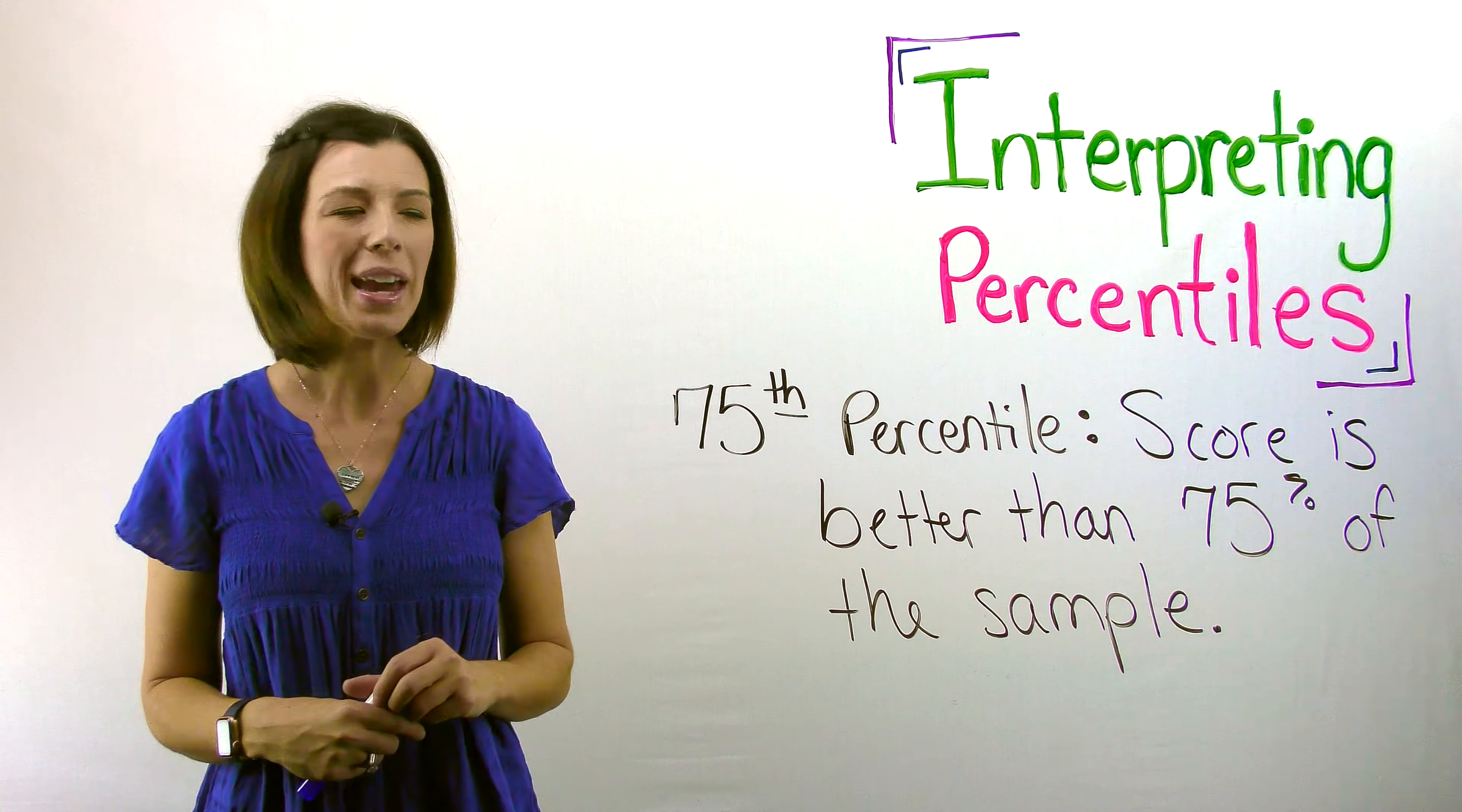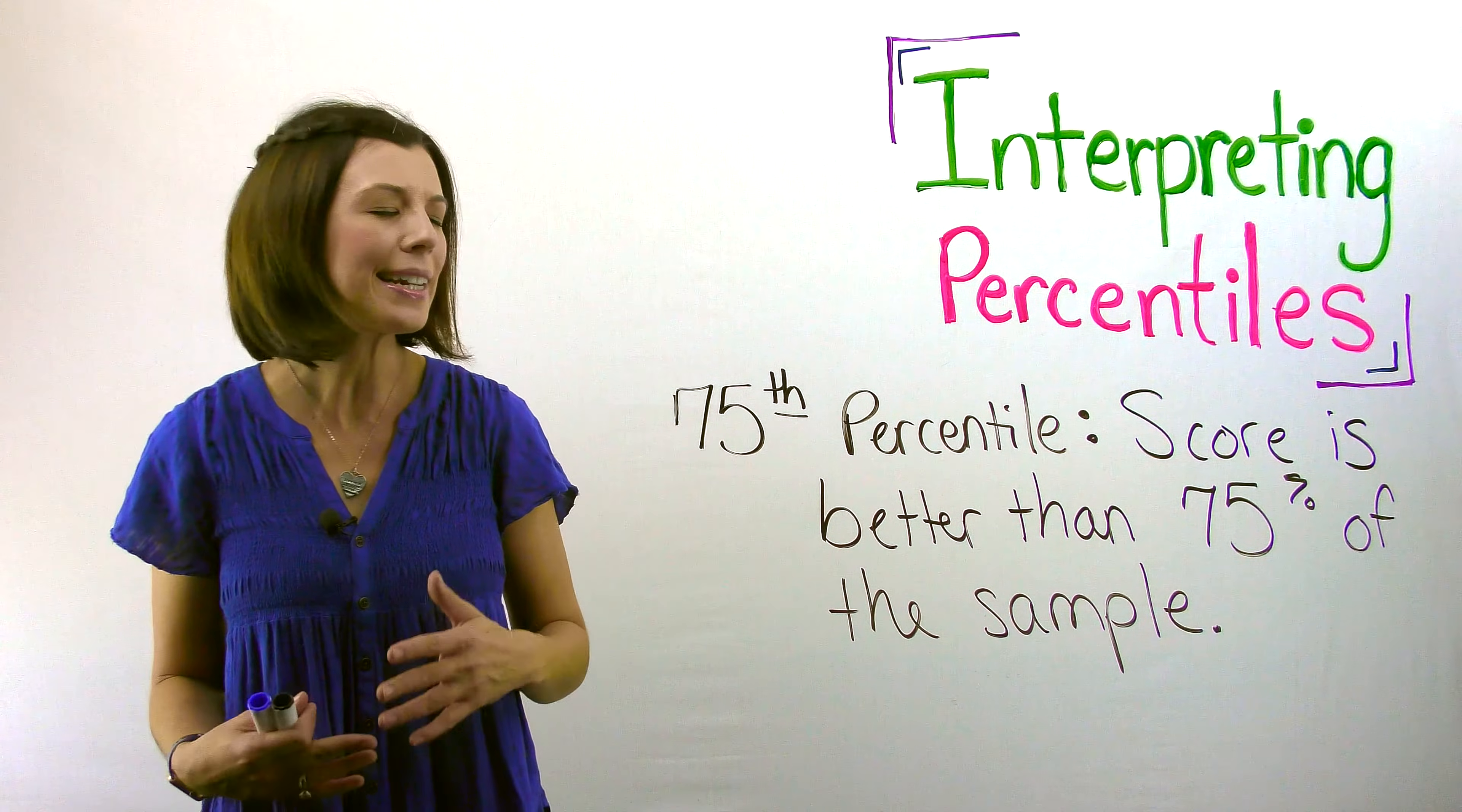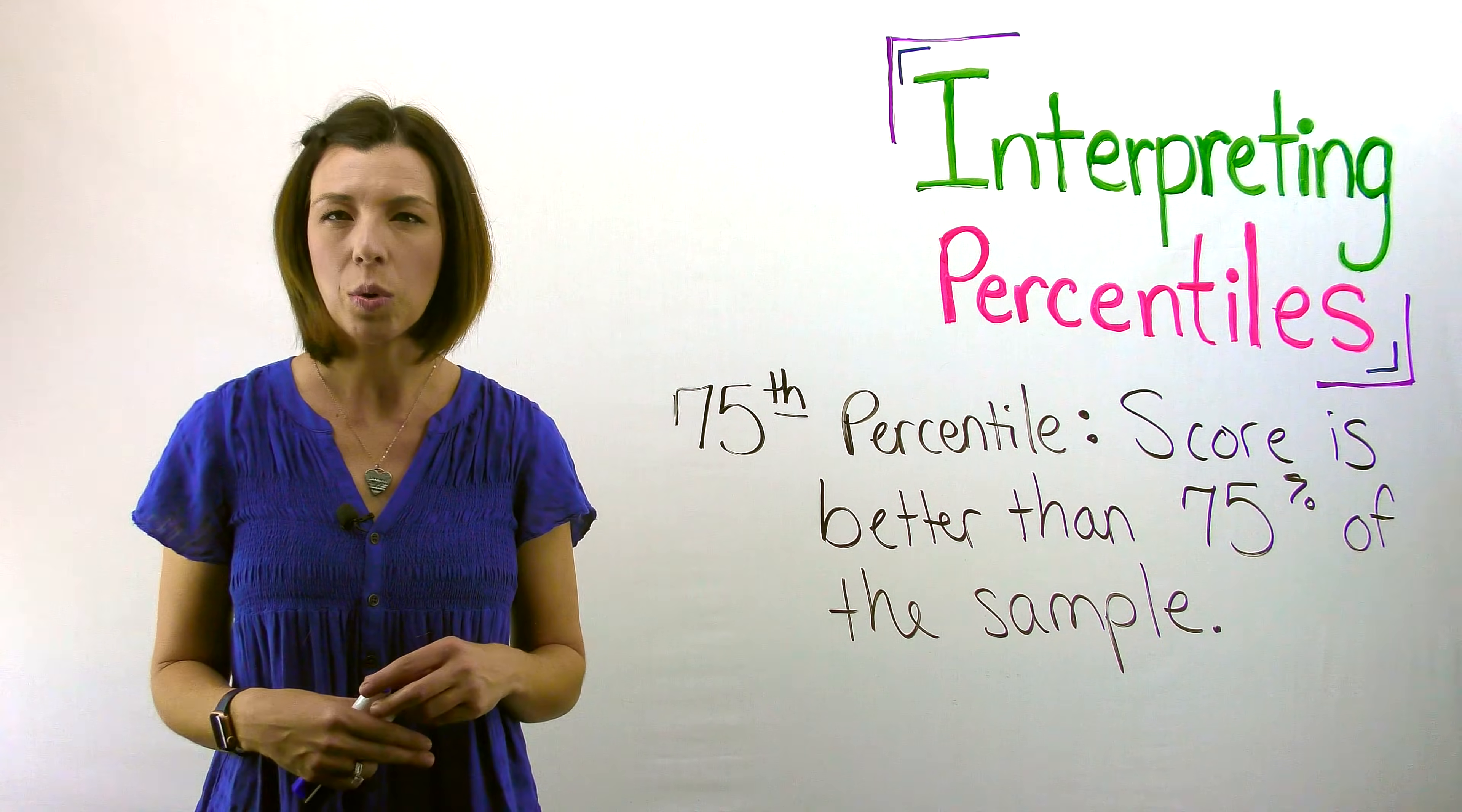I want to make sure that we're on the same page. The 75th percentile has absolutely nothing to do with my overall score. So this doesn't mean that I scored, let's say, 75 as a C. It doesn't mean I scored a C on the test. It also doesn't mean that I've mastered 75% of the content. This is literally a ranking score.